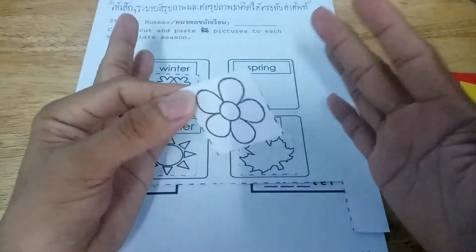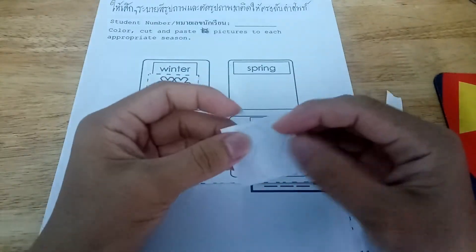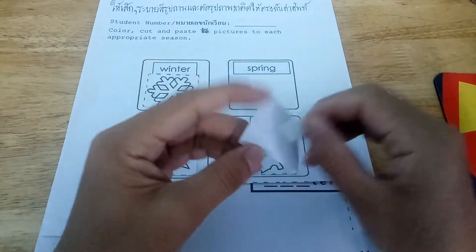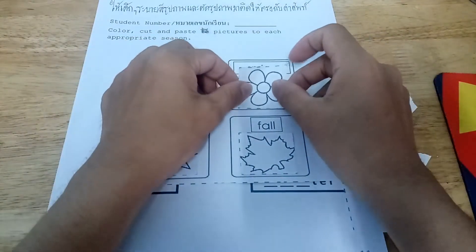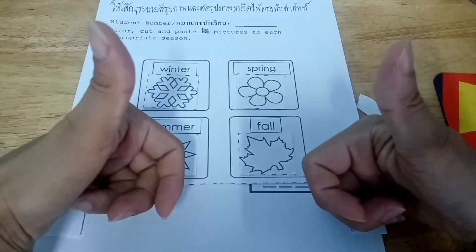And the last one. When there is a lot of flower, it means it's already spring season. Okay, that's it. Good job.